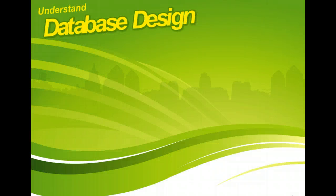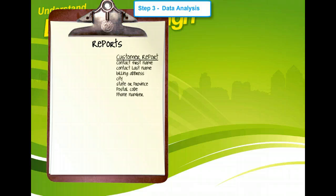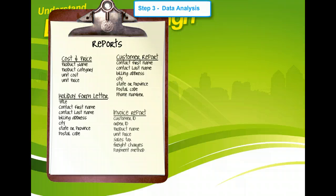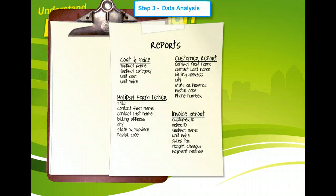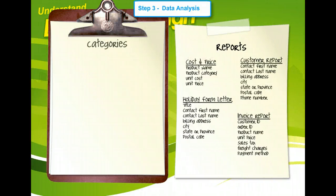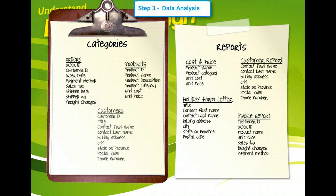After you've developed your reports, make a list of the types of data in the reports. For example, some reports might have customer information, including first name, last name, and address. In your lists, note which reports contain each type of data. The customer's first name might be used in the customer list report, the invoices report, and the holiday form letter. After you've listed all of the data in your reports, group the data into categories, such as customer data, sales data, and product data.